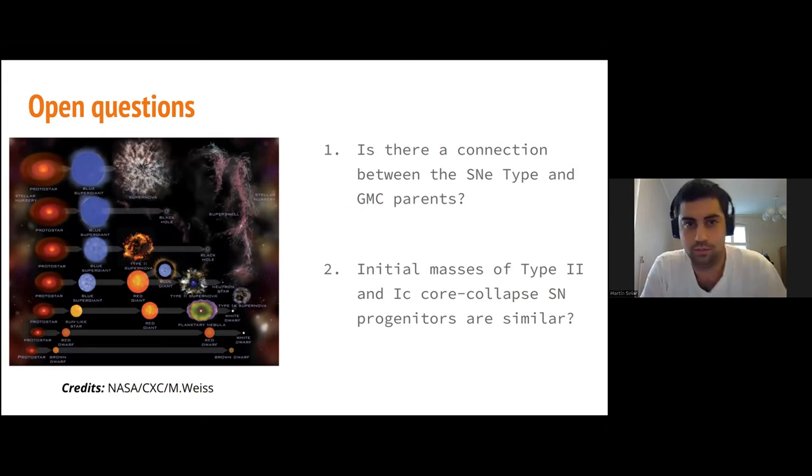To analyze this, instead of the direct way of observing the supernova progenitor, it's necessary to study the environment—the molecular cloud parent, the molecular gas. Is there a connection between the supernova type and the molecular cloud parent? And second, are initial masses of Type II and Ic core-collapse supernovae similar? The short answer is yes and yes. The first one has been answered in previous papers, but how is what I want to answer here. The second is controversial, but I agree that in general the progenitors of Type Ic supernovae are binary.